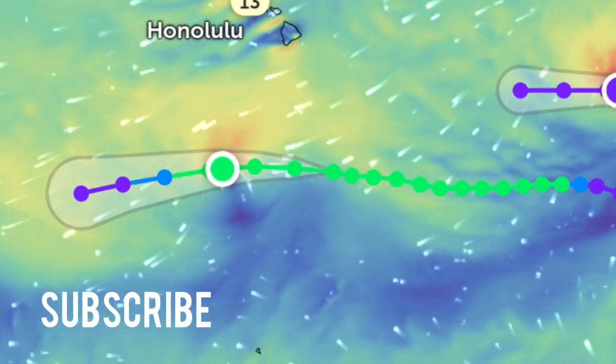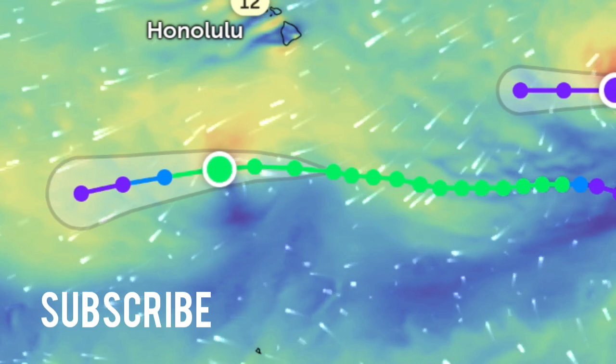This has displaced much of the convection to the north of a partially exposed low-level circulation center.